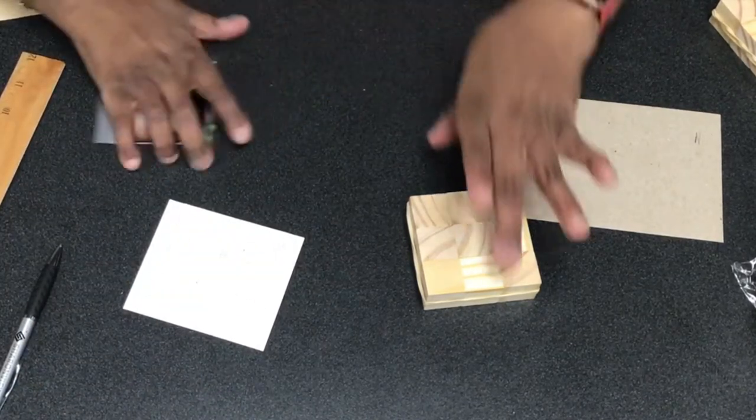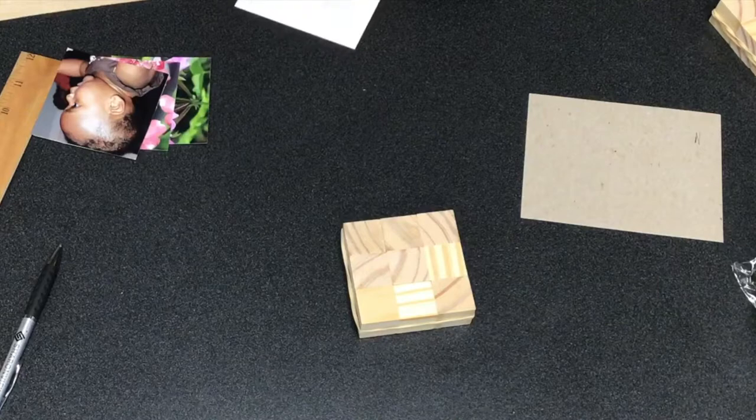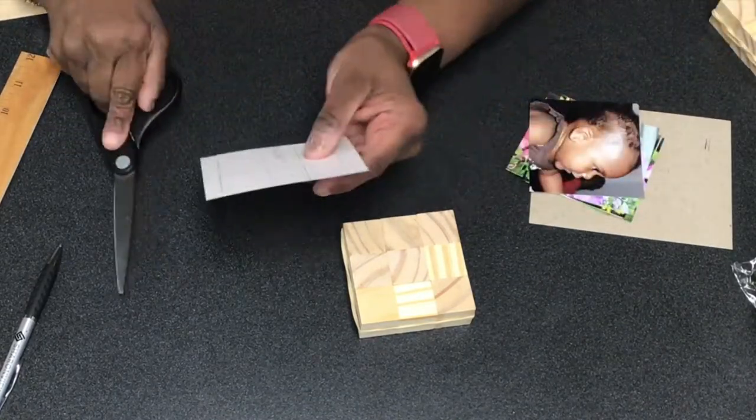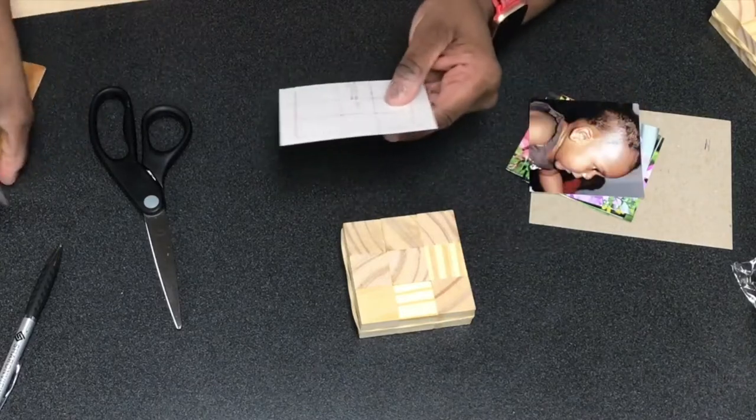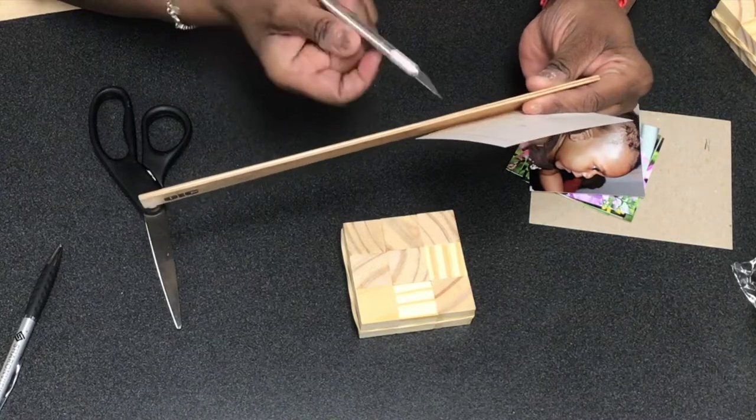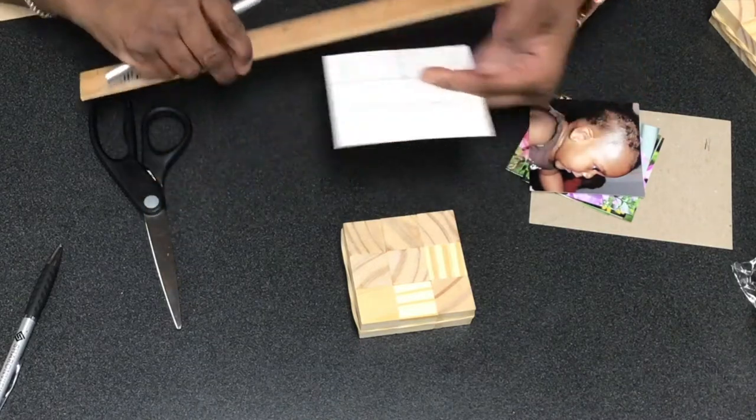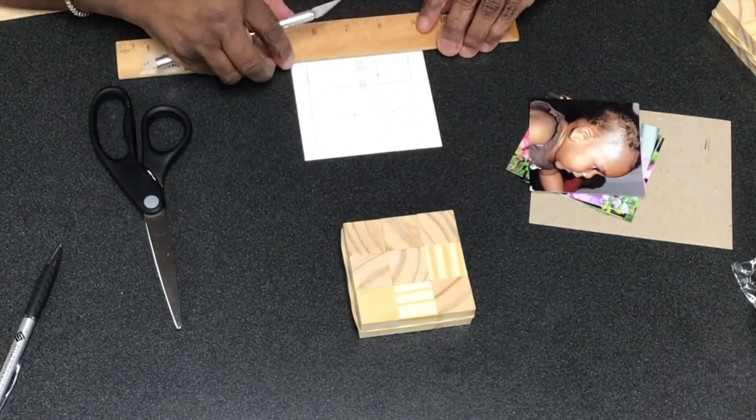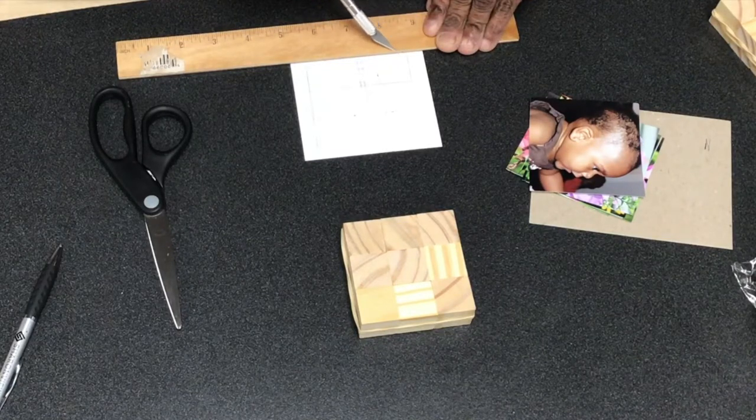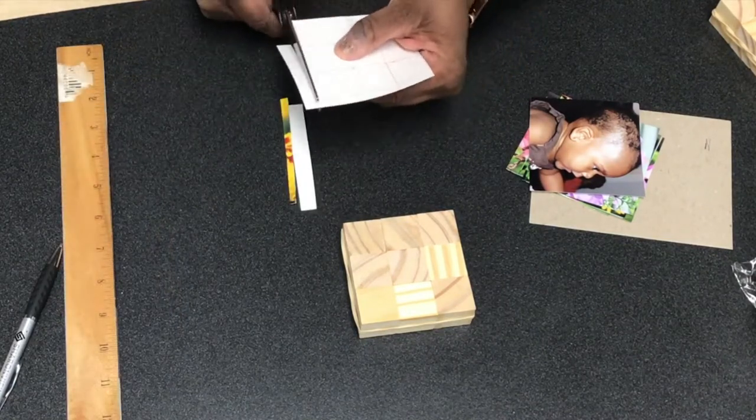Once you have your squares cut, if you're steady with your scissors then you can use your scissors. If you're steady with an exacto knife you can use a straight edge and rest your exacto knife right along here and that will guide you. I'm just going to use my scissors.